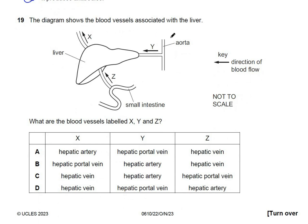Question 19: blood vessels X, Y, and Z are associated with the liver. X is leaving the liver heading toward the heart — this is the hepatic vein. Z carries blood from the small intestine to the liver — this is the hepatic portal vein. Y is therefore the hepatic artery. The answer is C.